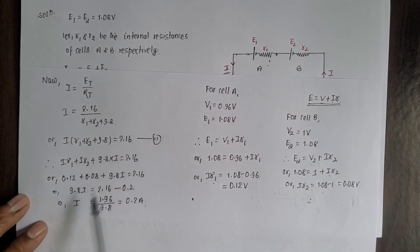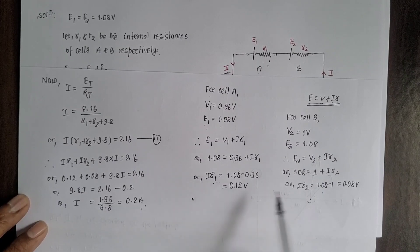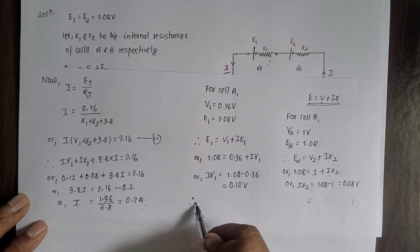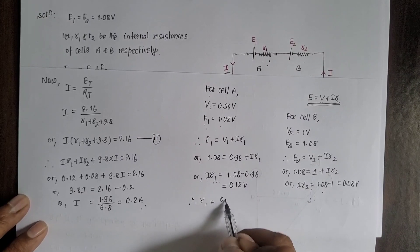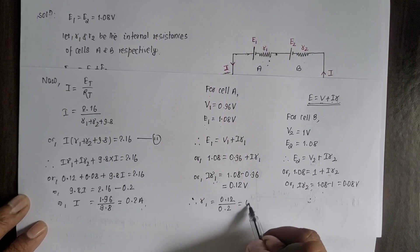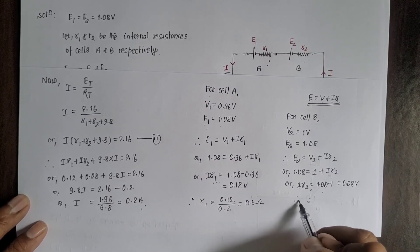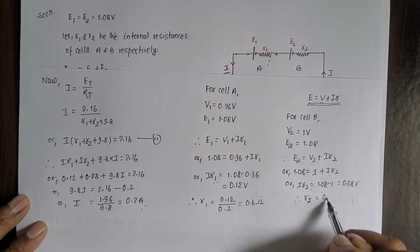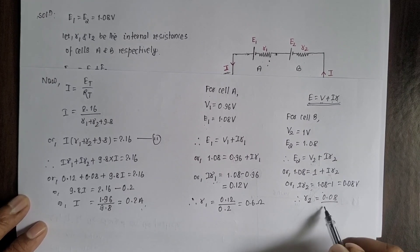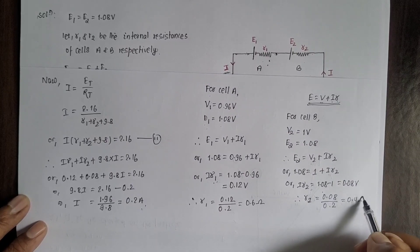Now substituting the value of i back into the iR1 and iR2 relations: R1 equals 0.12 divided by i equals 0.12 divided by 0.2, which equals 0.6 ohm. And R2 equals 0.08 divided by i equals 0.08 divided by 0.2, which equals 0.4 ohm.